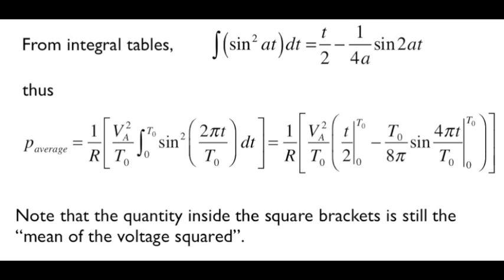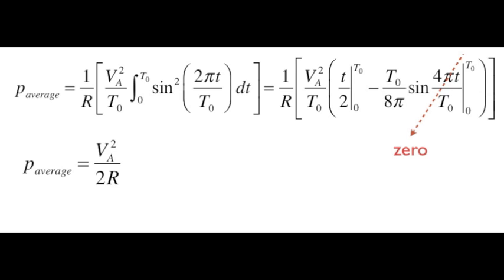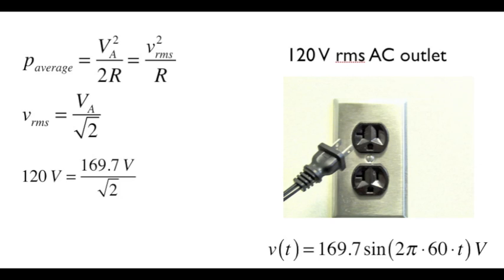We can choose any value of lowercase t to start the integral. Let's choose t equal to 0, and then the limits of integration will be from time t equals 0 to time t equal to the period. Using those limits of integration, we can see that the second term inside the square bracket goes to 0. So the average power ends up to be simply equal to 1 over 2R times the peak value of that sine wave squared. Of course, it's also equal to the rms voltage squared divided by R. Comparing those two expressions, the rms value of a sinusoidal voltage that varies between plus V_A and minus V_A is the value of that peak value divided by the square root of 2.